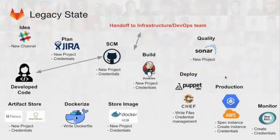Here we look at the legacy state — a set of tools that many enterprises use for DevOps. A developer starting a brand new project will have code and begin creating it, uploading to their source control management system — in this case GitHub Enterprise. We'll need a new project there and make sure the right people are credentialed and have access to that project.